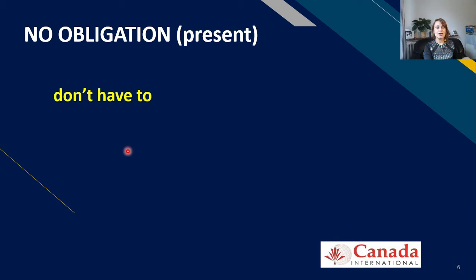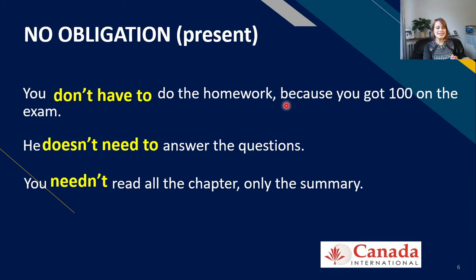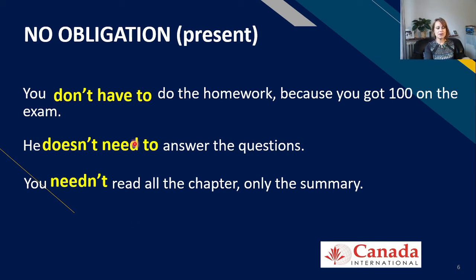For no obligation in the present, these are all phrases: don't have to, doesn't need to, and needn't. For example: 'You don't have to do the homework because you got a hundred on your exam.' 'He doesn't need to answer the questions.' 'You needn't read all the chapter, only the summary.' Don't have to and doesn't need to are more common; needn't is more British. In American English, the first two are preferred.